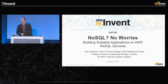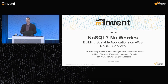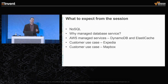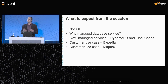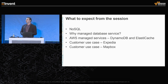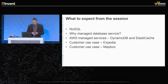Hi, everyone. My name is Dan Zemenski. I'm a senior product manager on our database services team, and I'm excited to be sharing the stage today with Kuldeep from Expedia and Ian from Mapbox. Here's what we have for you today: we'll start with an overview of what is a NoSQL database, talk about the concept of a managed database service, do an overview of the two managed NoSQL services we offer at AWS — DynamoDB and ElastiCache — and then have Kuldeep and Ian share their use cases of building cool applications using these two services.